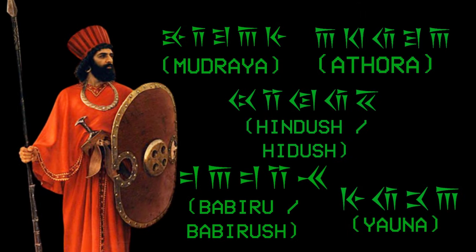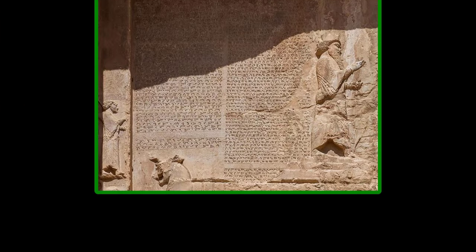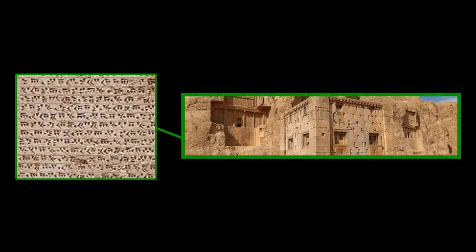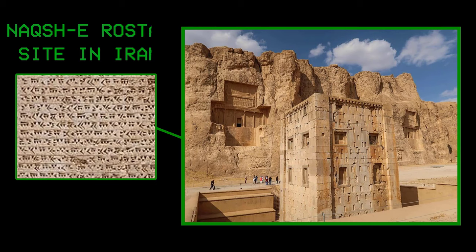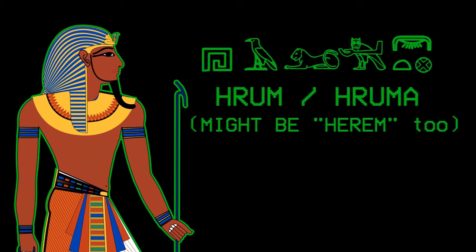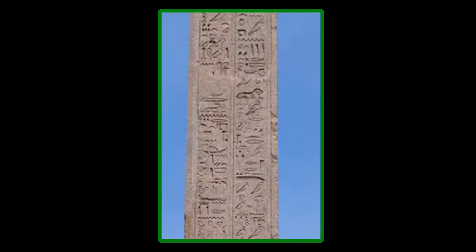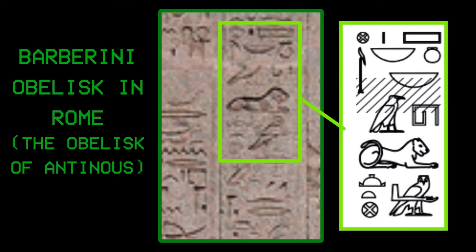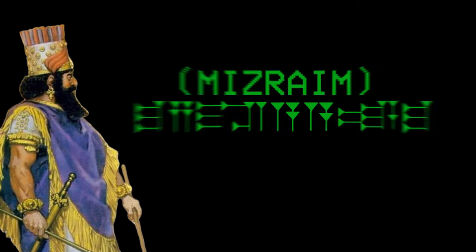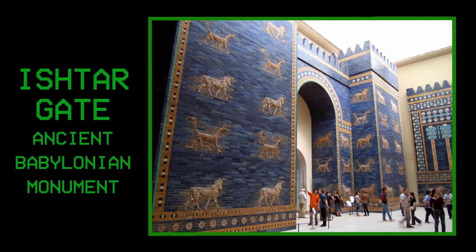As for the names given by the ancient Persians to Egypt and other civilizations, they are found written in ancient Persian and cuneiform letters on the walls of an archaeological site in Iran called the Naqsh-i Rostam site. Likewise, the name given to Rome by the ancient Egyptians, which is Harem, is written in hieroglyphics on the Barbarini obelisk in Rome, Italy, which dates back to the era of the Roman emperor Hadrian. As for the name that the Babylonians gave to Egypt, which is Mitzrayim, it was found on the inscriptions on the Ishtar Gate in the ancient Babylonian monuments in Iraq.